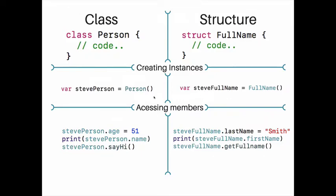After creating instances, we can access their members. Here we are accessing the 'age' property and setting it with a value. We can also get the value that the property has, and we can call methods — in this case 'sayHi'. In structures it is the same: we use dot syntax to access properties or methods.